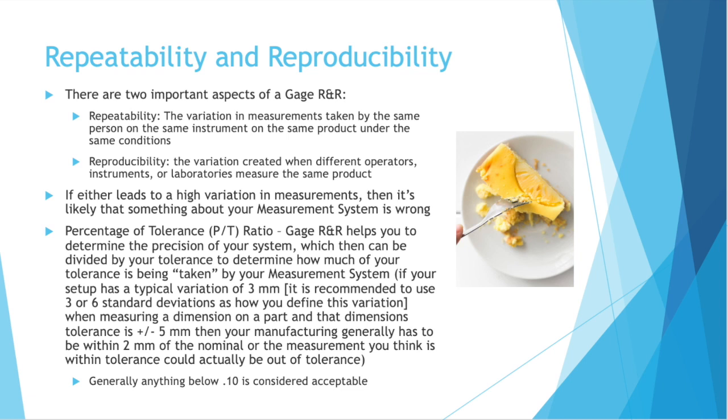Then we have the percentage of tolerance ratio, PT ratio. Gauge R&R helps you to determine the precision of your system, which can then be divided by the tolerance on your parts to determine how much of your tolerance is being taken by your measurement system. If your setup has a typical variation of three millimeters, and it's recommended to use three or six standard deviations as how you define this variation, so if you have that variation of three millimeters when measuring a dimension on a part, and that dimension's tolerance is plus or minus five millimeters, then your manufacturing generally has to be within two millimeters of the nominal, or the measurement you think is within tolerance could actually be out of tolerance.